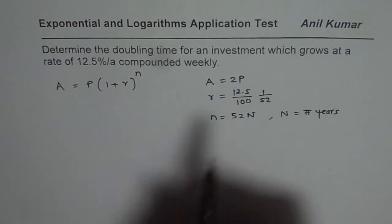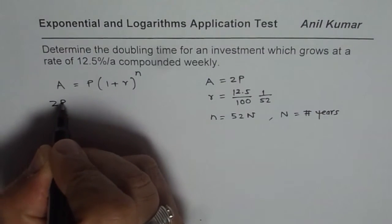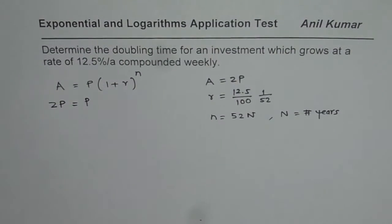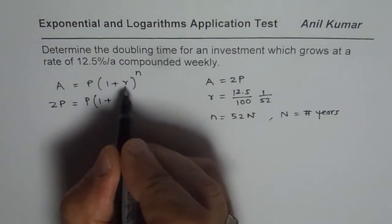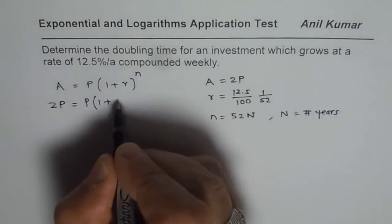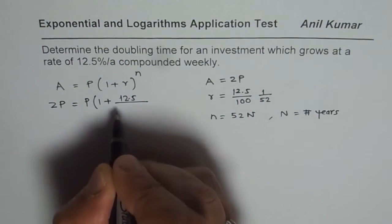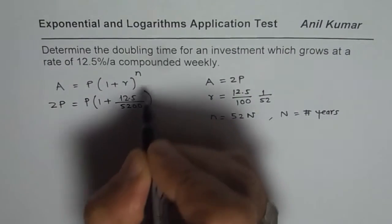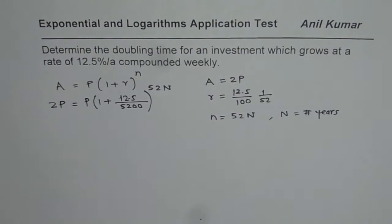Now let us try to solve this equation. We have A equals 2P, so we will write double the amount whichever is invested. In such questions you do not really need the investment amount. So, 1 plus interest rate is 12.5 over 5200 to the power of 52n. That is how you get your equation.